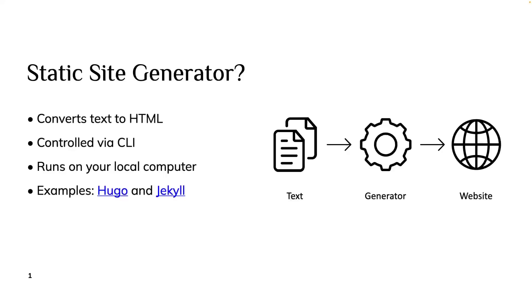Two popular examples of static site generators are Hugo and Jekyll. Both are quite popular but they come with a learning curve, and you definitely need CLI and a code editor to make changes. The little illustration on the right-hand side shows the simplified flow of a static site generator: you start with text documents, then the static site generator processes them, and then these files get pushed to a hosting provider which hosts your static website.